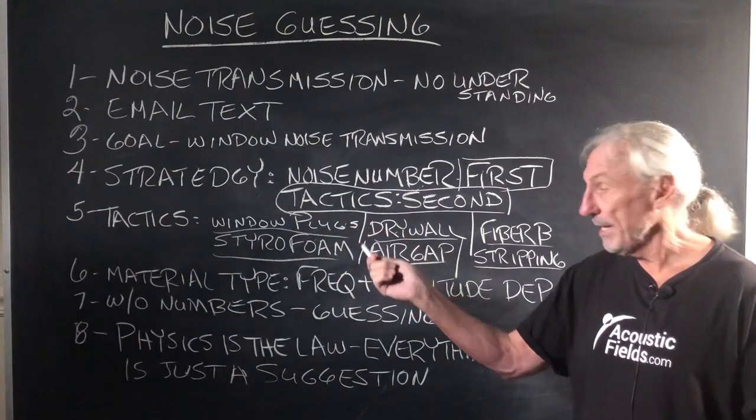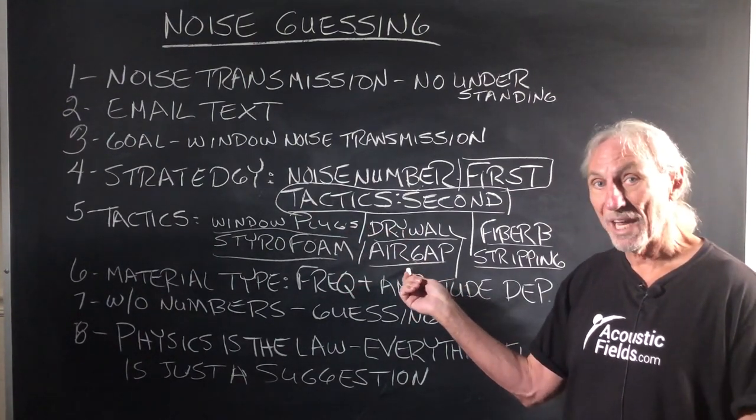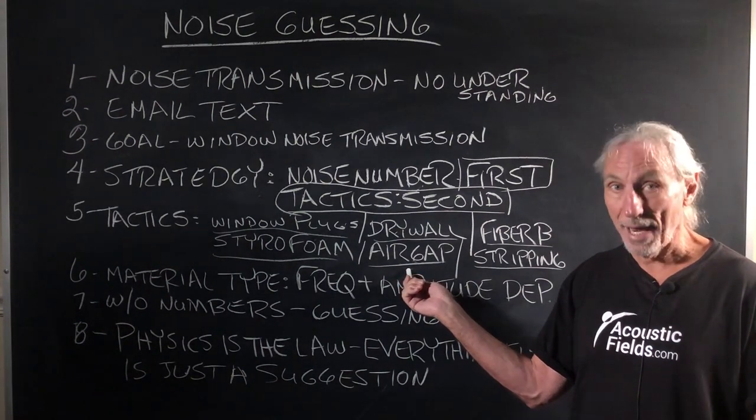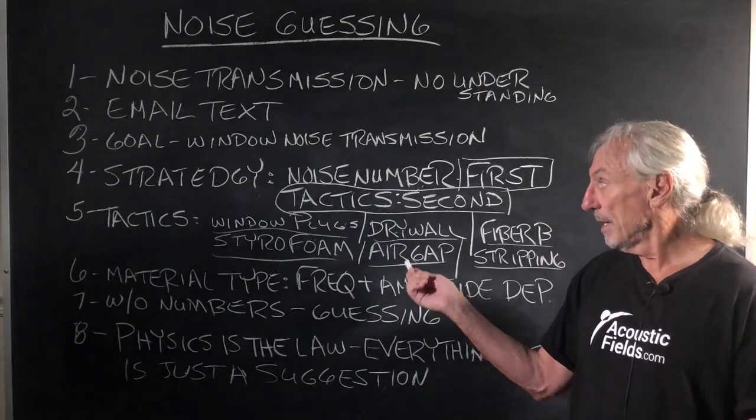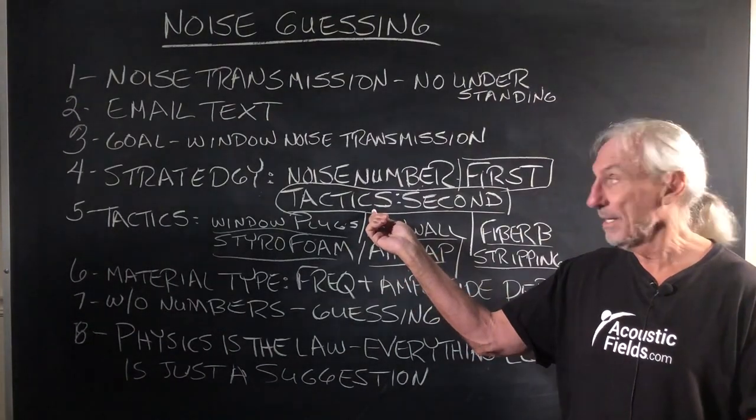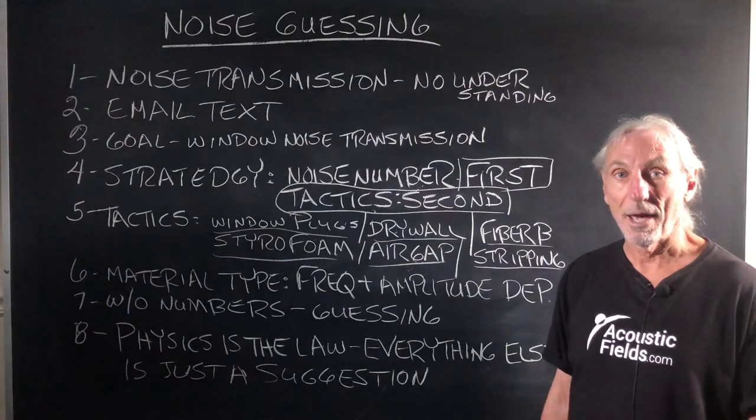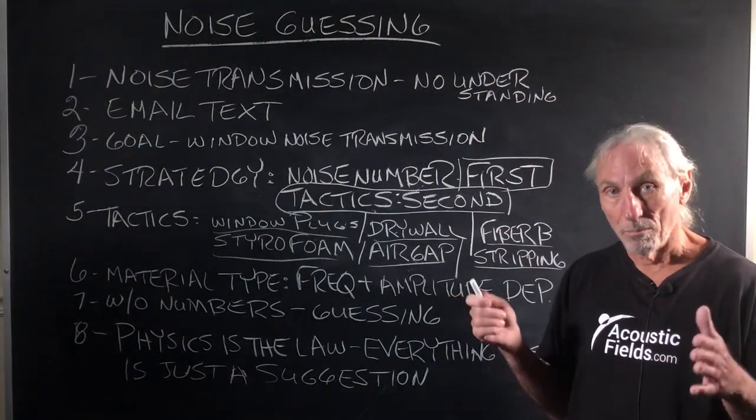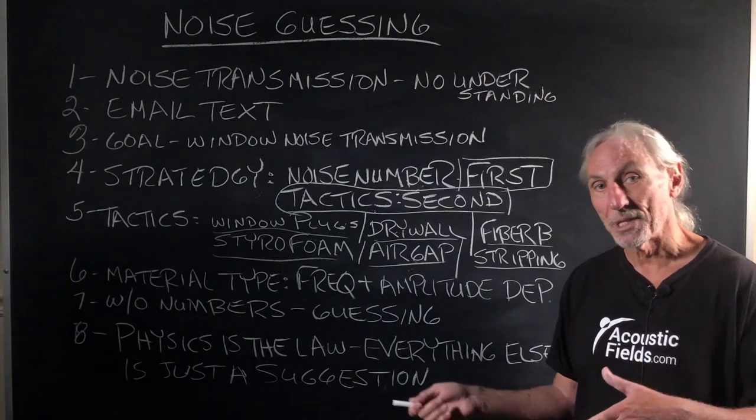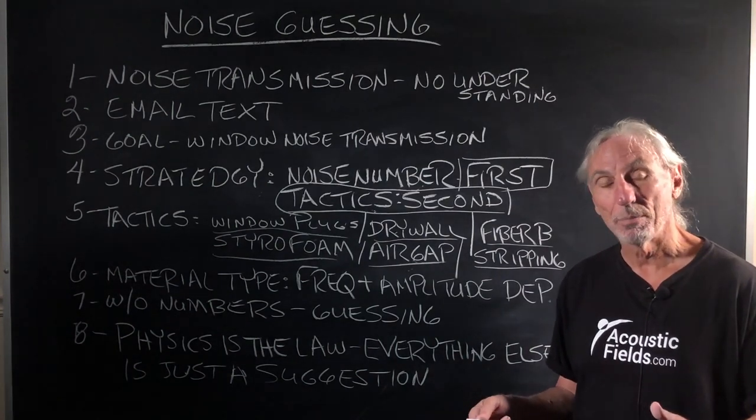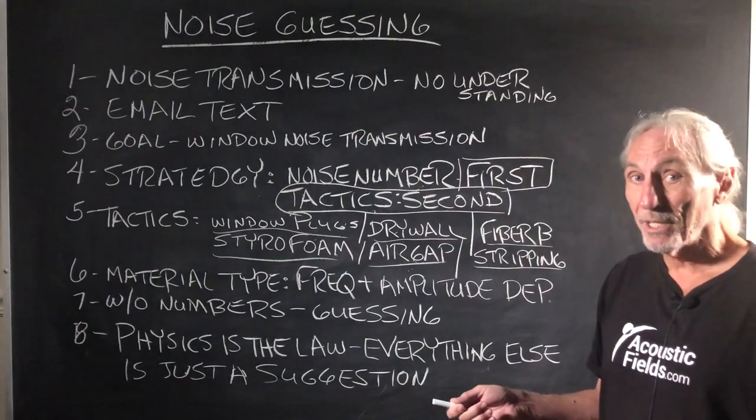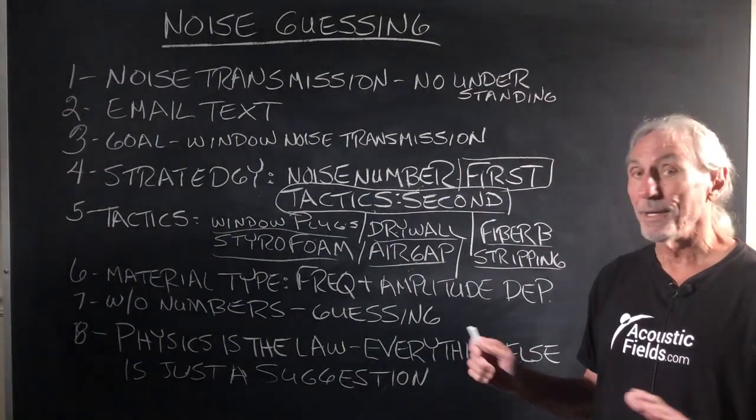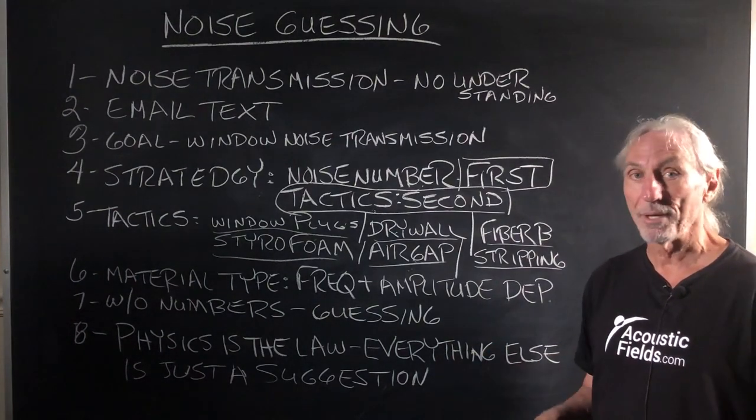Window plugs, whatever that is, is different than using air as a barrier technology. Air can be a barrier material type. Air can be a tactic if you have noise numbers and know what you're fighting. It's just one more tactic material type in our toolbox that we use. It has validity in some cases, not many, but in some cases, and not the way they represent it on the internet.